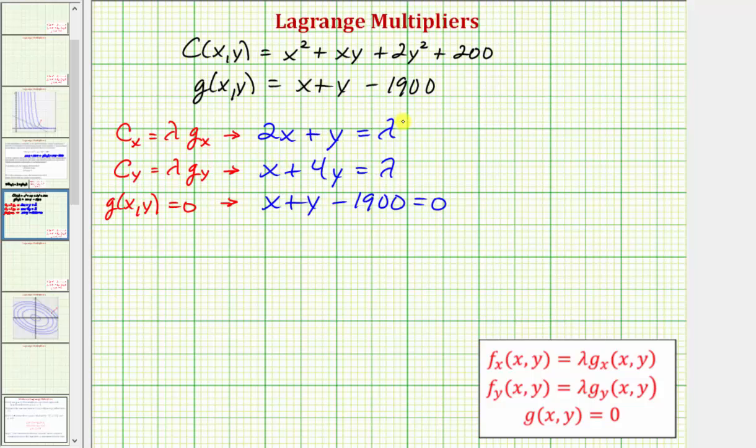Notice how our first two equations are already solved for lambda, so if they're both equal to lambda, then it must be true that 2x plus y must equal x plus 4y. And now if we solve this equation for x or y, we can then perform substitution into the constraint to form an equation with one variable. Let's go ahead and subtract x on both sides, and also subtract y on both sides. Notice how this would give us x equals 3y. So now that we know that x must equal 3y, we'll substitute 3y for x in our constraint, then solve for y.